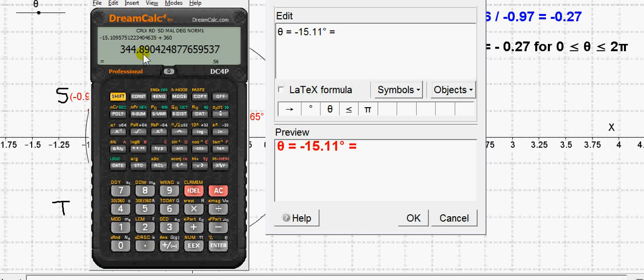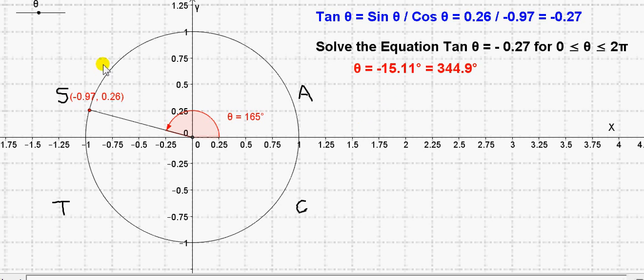So to two decimal places, we get 344.8, well, 344.9 degrees. Now let's see this on the diagram.